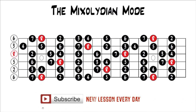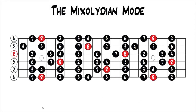Mixolydian is your third major mode. There are three major modes, and as you should remember, when you're building chords there are three spots where you can build major chords: the one chord, the four chord, and the five chord. So the Mixolydian mode is built off the fifth note — it's the fifth mode of the major scale, and it's a major mode.